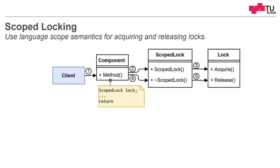The problem is that we as a client sometimes forget to release locks. The idea is: whenever we enter a critical section, we acquire a local variable on our stack. The compiler calls the constructor of this variable, and the constructor acquires the lock. When we are finished with our work, the method returns, the scope is unwound, and the compiler automatically calls the destructor of our object, which releases the lock again — so we cannot forget it.